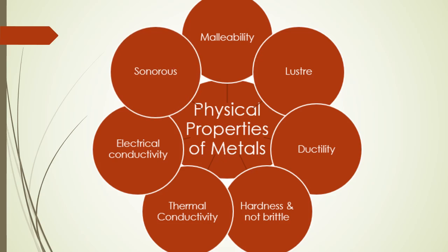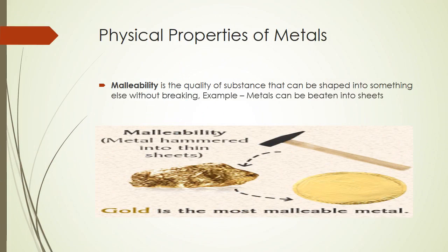Malleability is the quality of a substance that can be shaped into something else without breaking. For example, metals can be beaten into sheets — there are steel sheets, aluminum sheets — these are all examples of malleability.